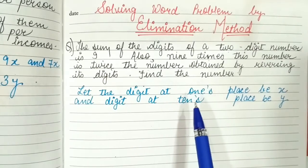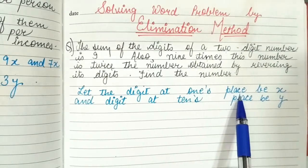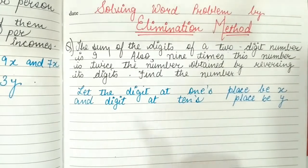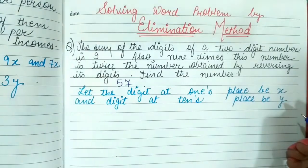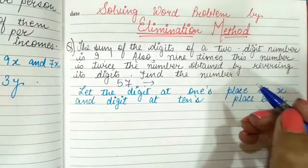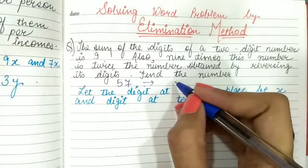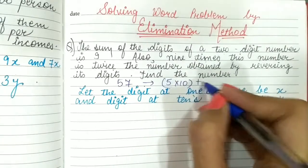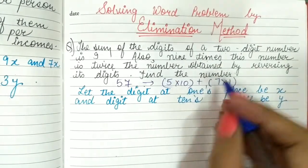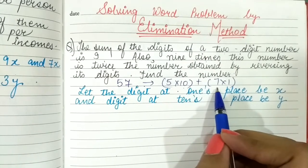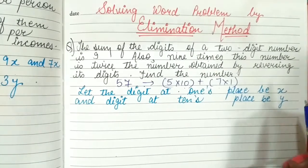We assume the digit at the 1's place is x and the digit at the 10's place is y. For example, take the number 57 written in expanded form: 5 into 10 plus 7 into 1, because 5 is at the 10's place so it is multiplied by 10, and 7 is at the 1's place so it is multiplied by 1.